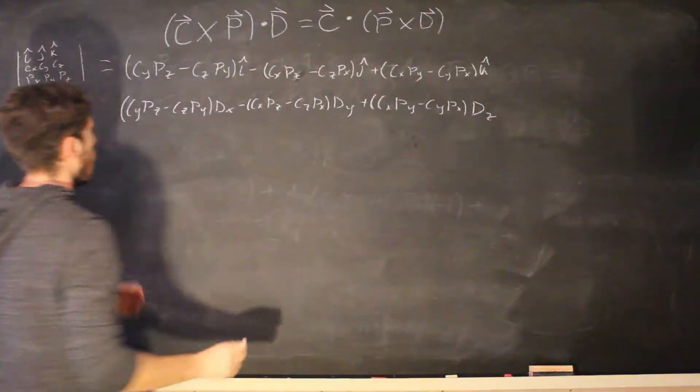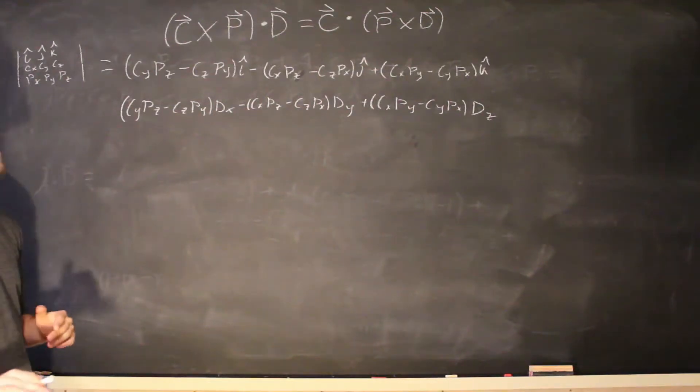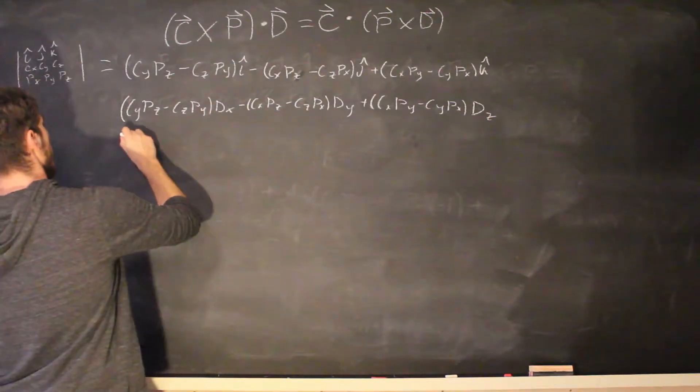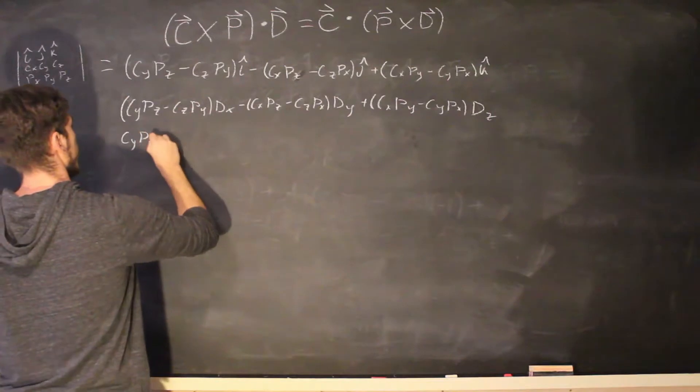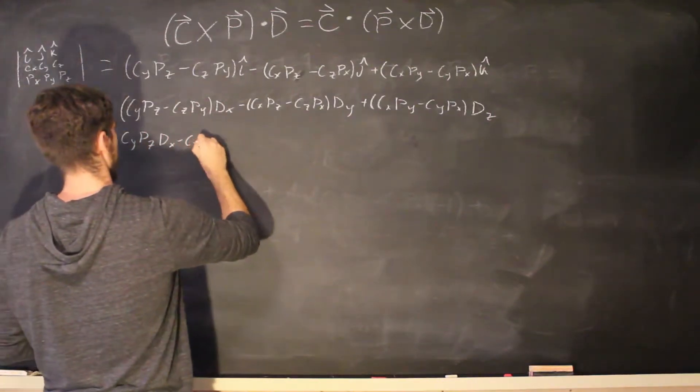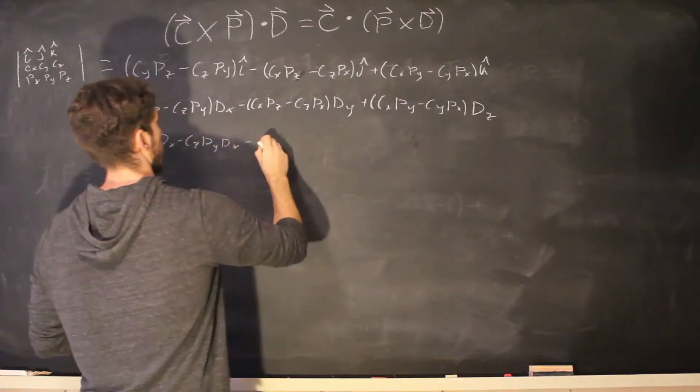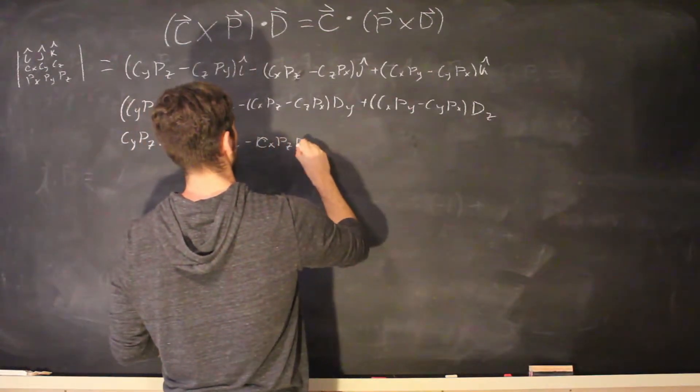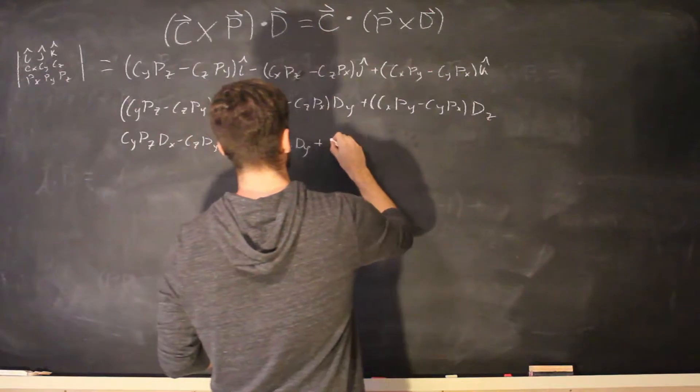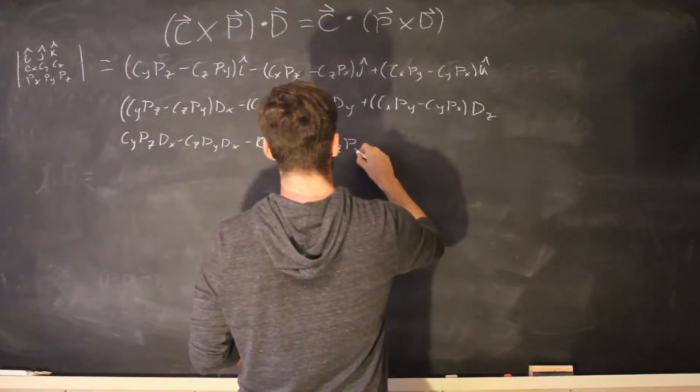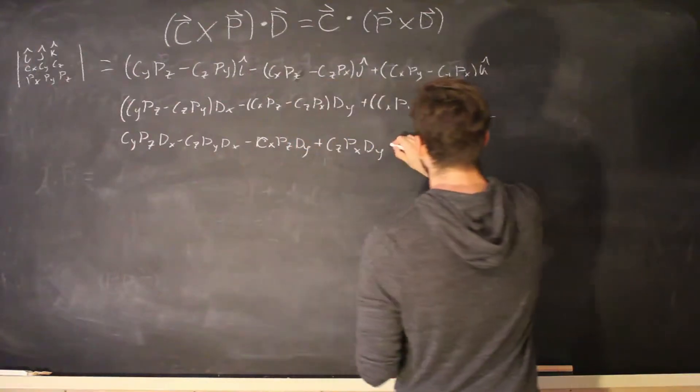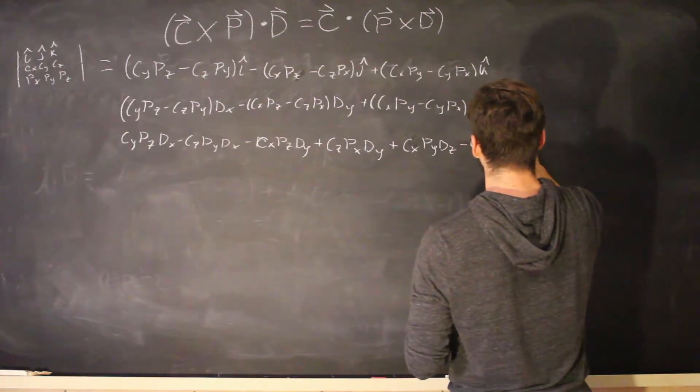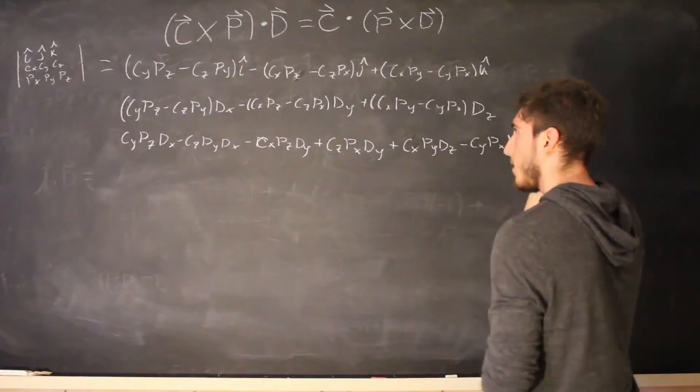and then I'm going to distribute it right now because it's going to make our lives way easier when I solve the right side. So we're going to have cy pz dx minus cz py dx minus cx pz dy plus cz px dy plus cx py dz minus cy px dz